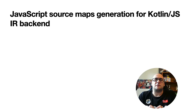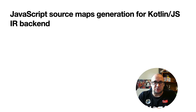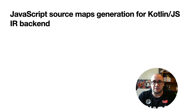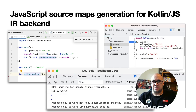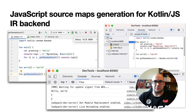Kotlin 1.5.30 brings JavaScript source maps generation for the Kotlin/JS IR backend, improving the debugging experience. This enables debugging support including breakpoints, stepping, and even readable stack traces with proper source references.